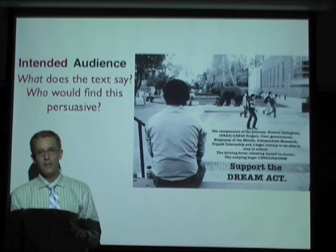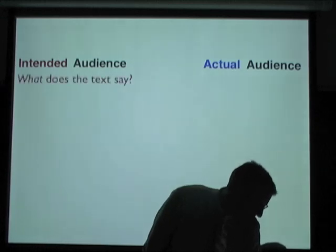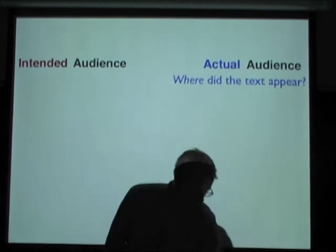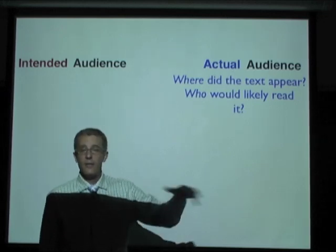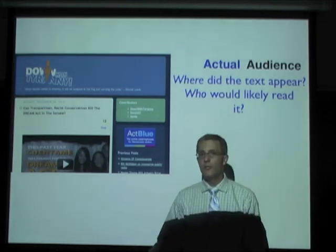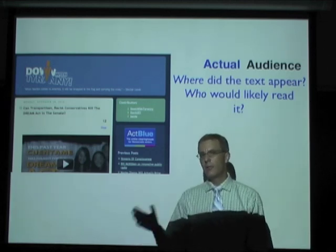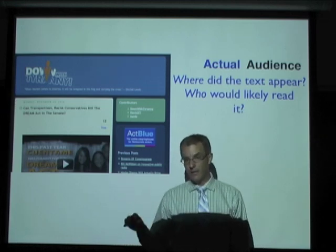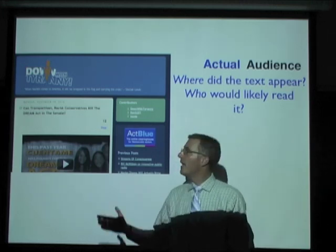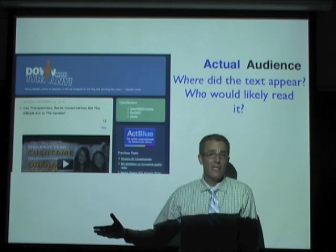So we've figured out some idea of who the intended audience is, but we also need to figure out who the actual audience is. You figure out the actual audience by asking yourself: where did the text appear, and who is likely to read it? You look at the context. I found this on a blog called Down with Tyranny. It largely addresses people with liberal or progressive politics. Since people with liberal or progressive politics care more about what someone does while in this country than how that person got here, I can say with some degree of certainty that the actual audience matches the intended audience, and when this appears on this blog, it's likely to be persuasive.